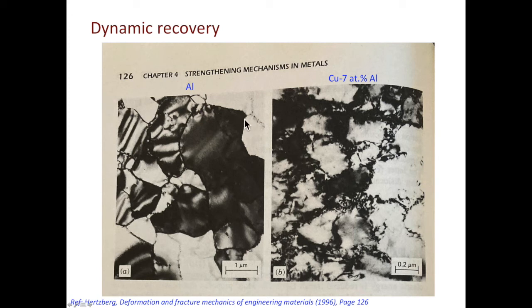One interesting observation to make is that the cell boundaries in aluminum seem to be sharper than the ones in the copper alloy. This difference is caused by the stacking fault energy. In aluminum, the stacking fault energy is high, which tends to give sharp dislocation walls.